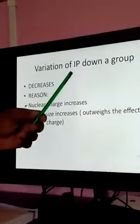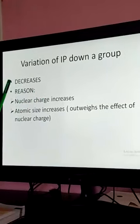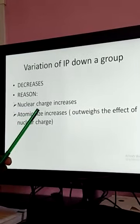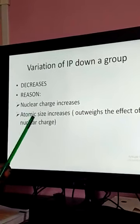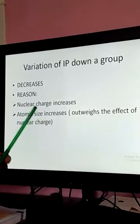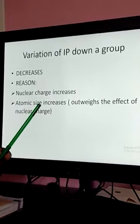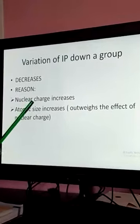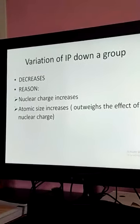Variation of ionization potential down a group. I already told you, it decreases. What is the reason? The reason is, the nuclear charge increases down the group and atomic size increases. Now, when you compare both, the atomic size, the effect of atomic size outweighs the effect of nuclear charge.